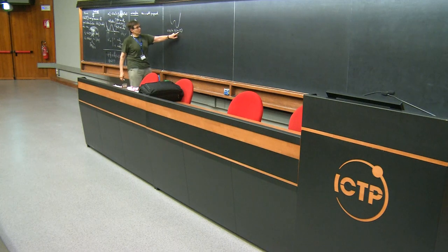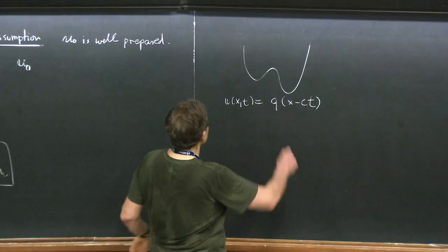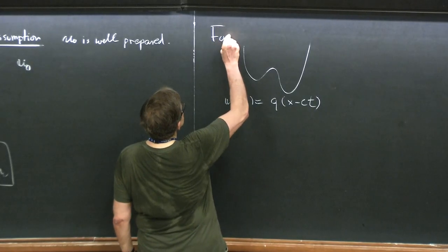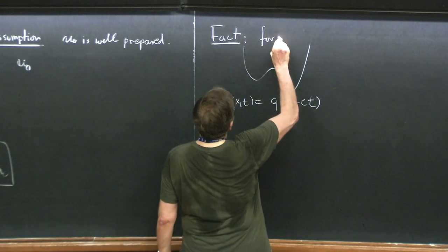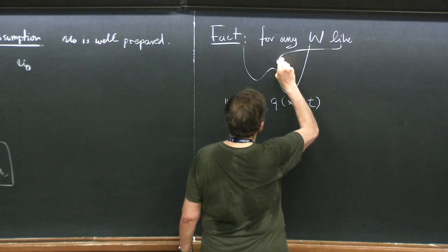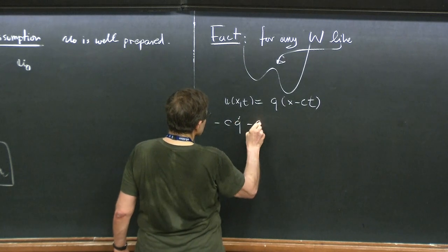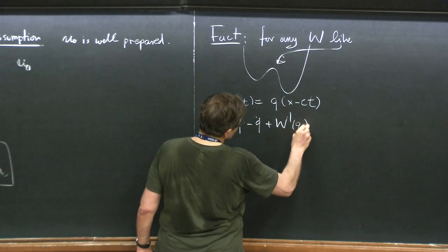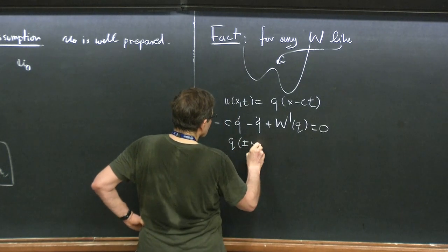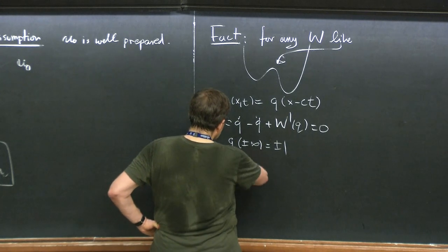The speed C is unique, and the solution is unique up to translation by constants. The only condition is that it decays exponentially to the equilibria at plus and minus infinity. That's a fact. For any W like this, there is a solution like that. It's increasing.